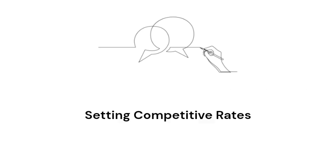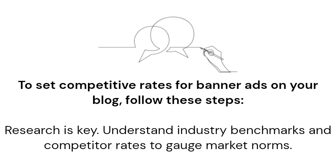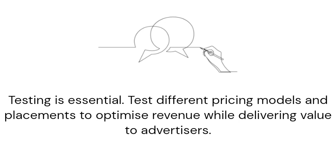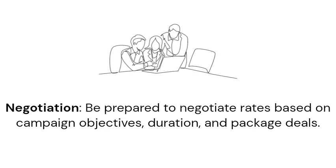Setting competitive rates: to set competitive rates for banner ads on your blog, follow these steps. Research industry benchmarks and competitor rates to gauge market norms. Analyse your analytics using Google Analytics or ad management platforms to justify pricing. Test different pricing models and placements to optimise revenue. Be prepared to negotiate rates based on campaign objectives, duration and package deals.